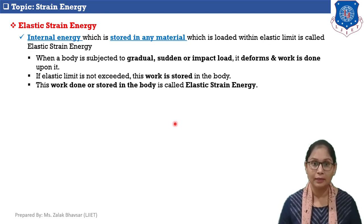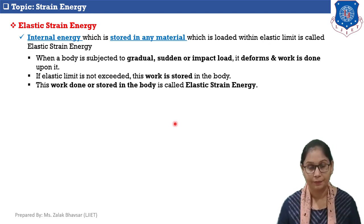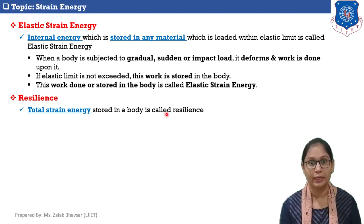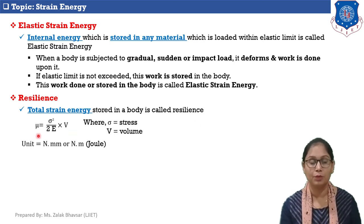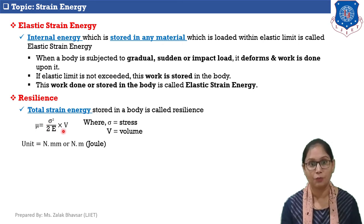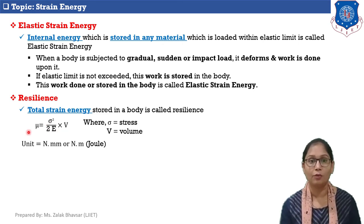This work done or stored in the body is called elastic strain energy, so strain energy equals the work done or stored in the body. Now, the total strain energy stored in a body is called resilience. Resilience is denoted by mu, and the equation is sigma squared upon 2E into V, where sigma is stress and V is volume. The unit of resilience is Newton·mm or Newton·meter.